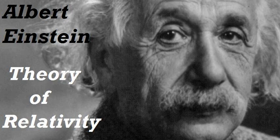Let me add a final remark of a fundamental nature. The success of the Faraday-Maxwell interpretation of electromagnetic action at a distance resulted in physicists becoming convinced that there are no such things as instantaneous actions at a distance not involving an intermediary medium — of the type of Newton's law of gravitation. According to the theory of relativity, action at a distance with the velocity of light always takes the place of instantaneous action at a distance, or of action at a distance with an infinite velocity of transmission. This is connected with the fact that the velocity c plays a fundamental role in this theory. In Part Two we shall see in what way this result becomes modified in the general theory of relativity.